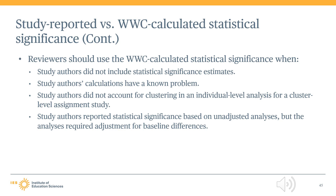It is also worth noting that if multiple main findings meet WWC standards in the same outcome domain, the WWC will pool these findings to determine the effect size and statistical significance at the domain level. The composite, as opposed to individual findings, would then be used to determine the study's effectiveness rating in the outcome domain. The procedures for these calculations are described in greater detail in Appendix F of the WWC Procedures and Standards Handbook.